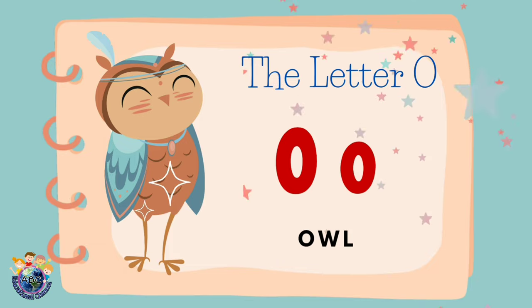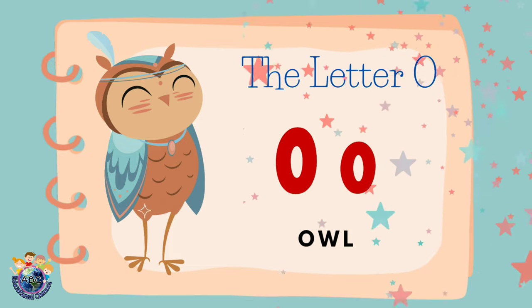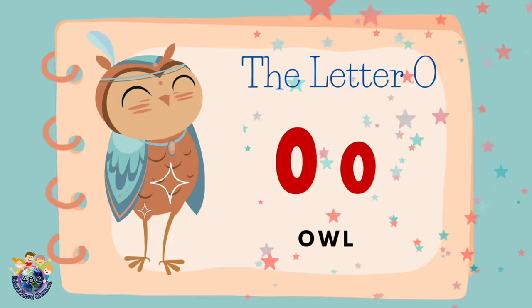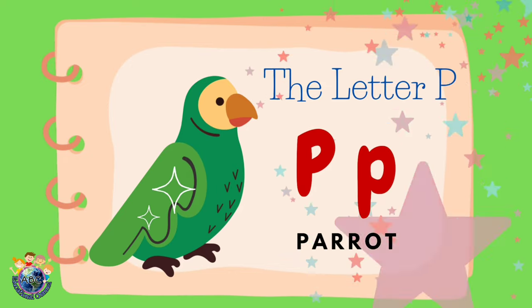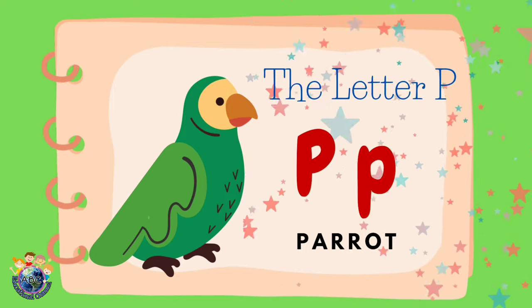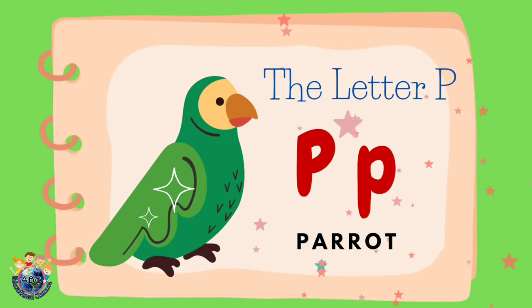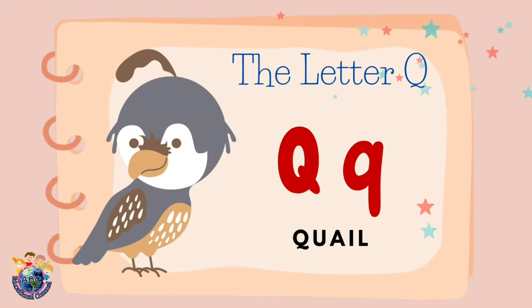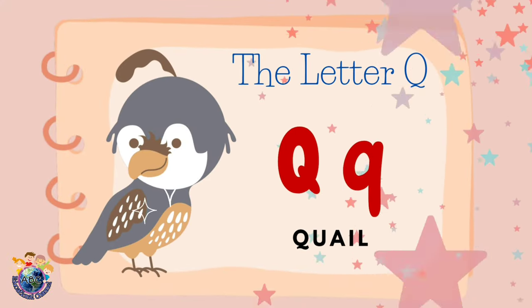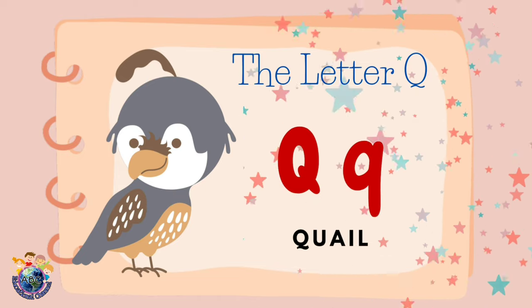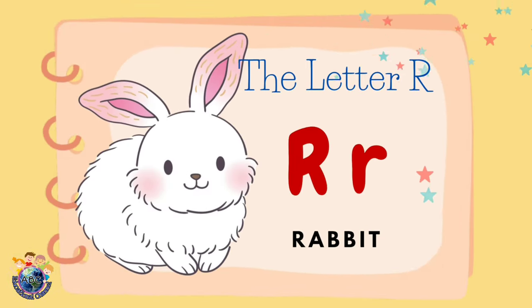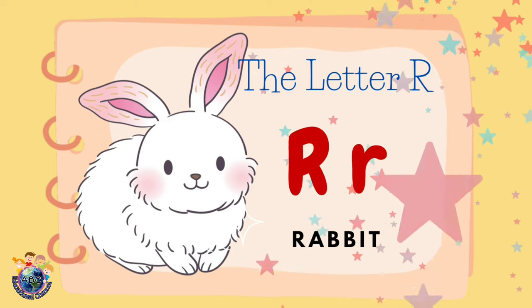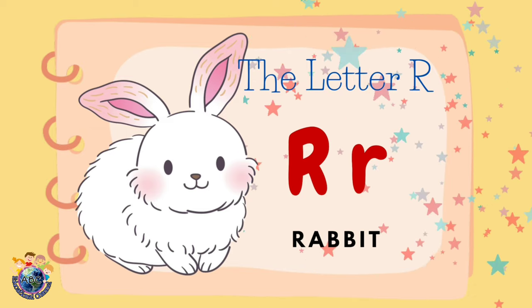The letter O. O is for owl. Owl. The letter P. P is for parrot. Parrot. The letter Q. Q is for quail. Quail. The letter R. R is for rabbit. Rabbit.